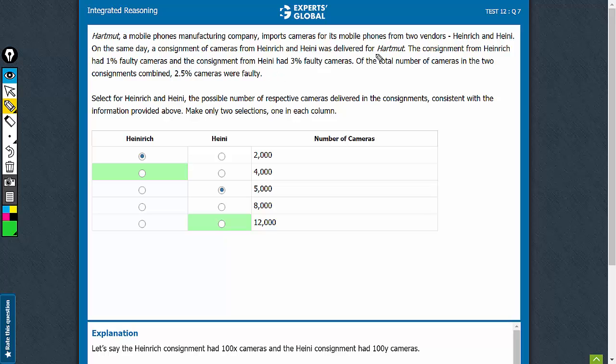This is a typical weighted average question. 1% of something, let's say 1H, plus 3% of the other, let's call it E. So 1H plus 3E is equal to 2.5H plus E.